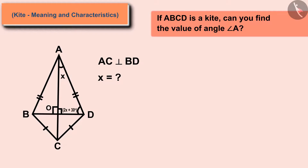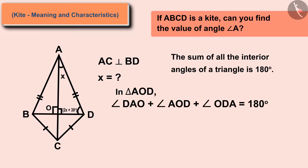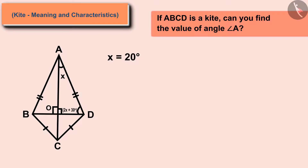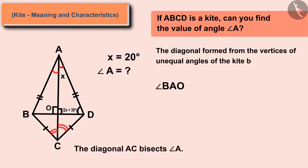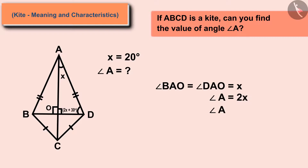Since the diagonal formed from the vertices of unequal angles of a kite bisects these angles, angle A = 2x. We found x = 20 degrees, so angle A = 2 × 20 = 40 degrees.